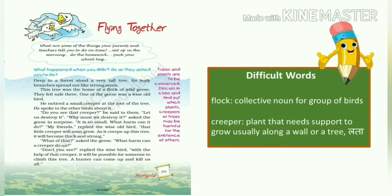He spoke to the other birds about it — उसने बाकी birds से बात करी अपने group में. Do you see that creeper? He said to them — कि क्या तुम लोगों को वो creeper नजर आ रही है? Let us destroy it — हमें इसे destroy कर देना चाहिए. Why must we destroy it? asked the geese in surprise — बाकी geese ने surprised होकर पूछा कि हमें इसे destroy क्यों कर देना चाहिए?